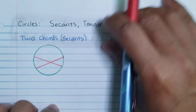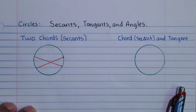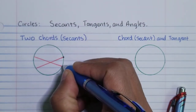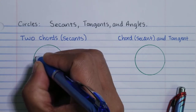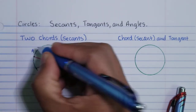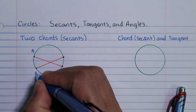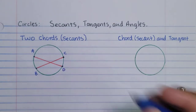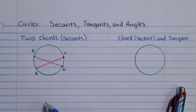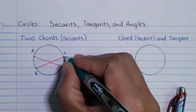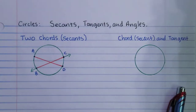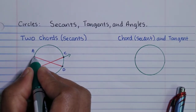I'm going to label the points on the circle. Let's call this point A, this one point B, point C, and point D. So these are two chords intersecting inside of a circle. But what happens if I extend them to form lines? I'll add arrows to indicate they continue forever in both directions — so now these are lines.